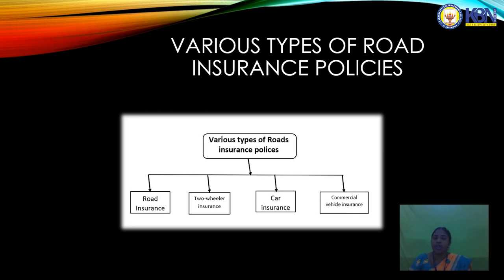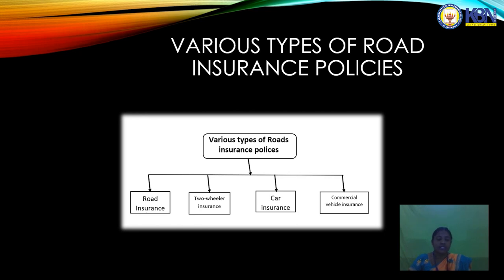Various types of road insurance policies include: road insurance, two-wheeler insurance, car insurance, and commercial insurance. Road insurance has three types: first, third party only (basic insurance); second, third party with theft and fire accidents; third, comprehensive road insurance — which means full insurance coverage for the policy holder, covering personal damages to goods and people by roadways.